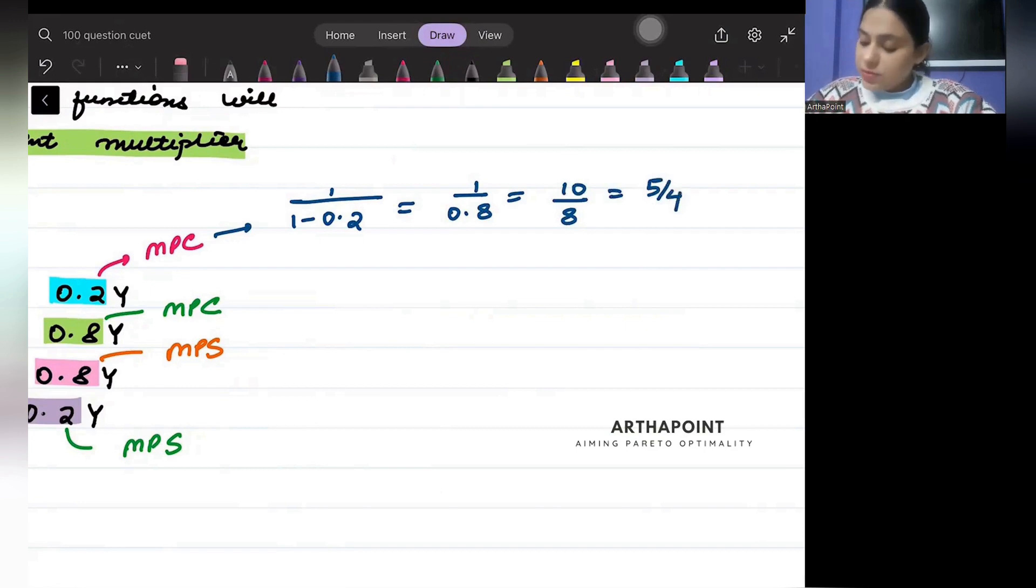What will be multiplier from here? 1/(1 - 0.8) = 1/0.2 = 10/2, that means 5.